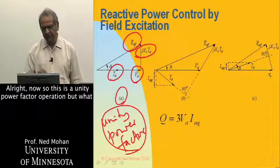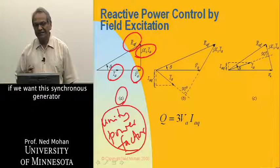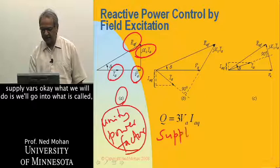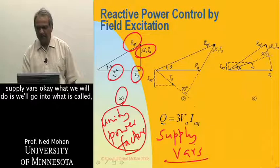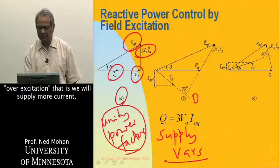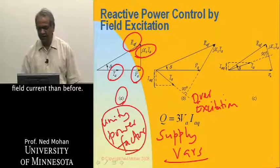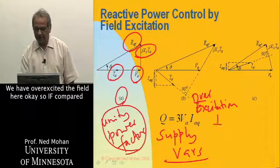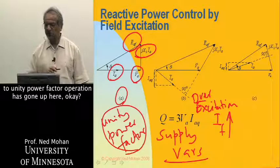This is unity power factor operation. But what if we want this synchronous generator to supply reactive power — supply VARs? What we will do is go into what is called over-excitation. We will supply more field current than before, over-exciting the field. So IF compared to unity power factor operation has gone up.